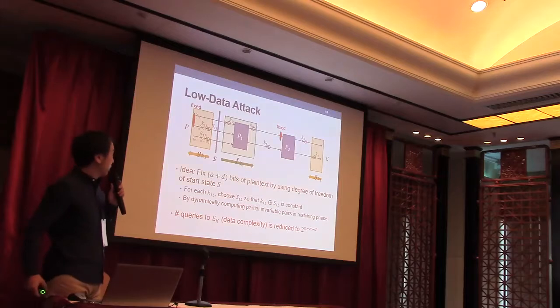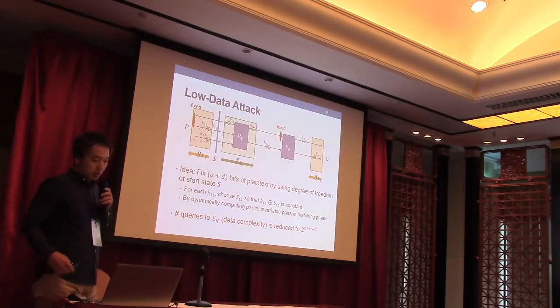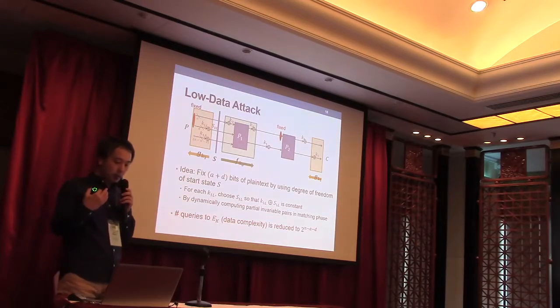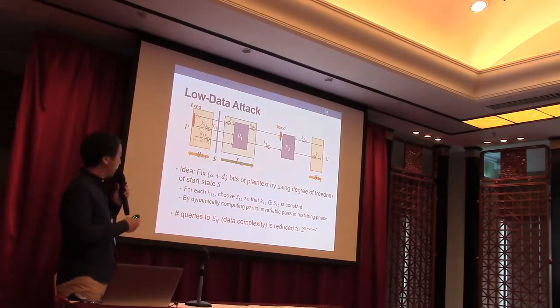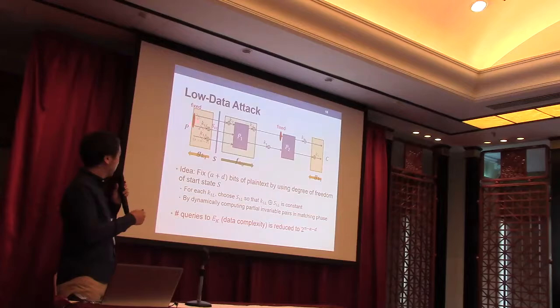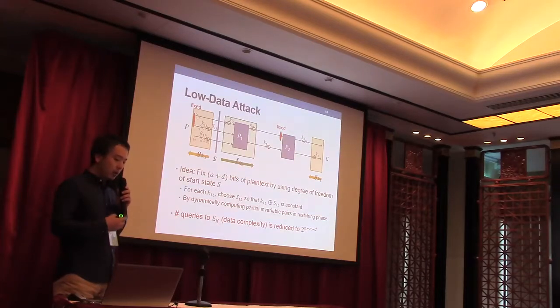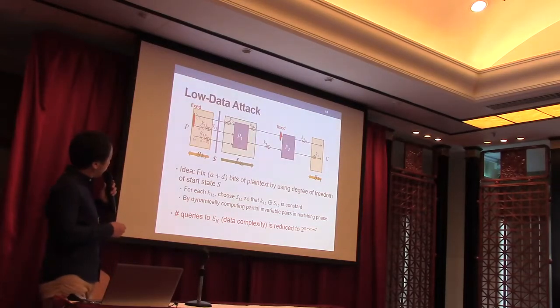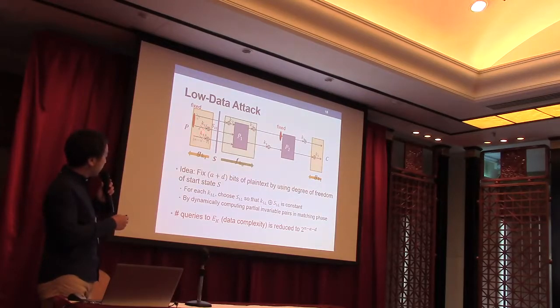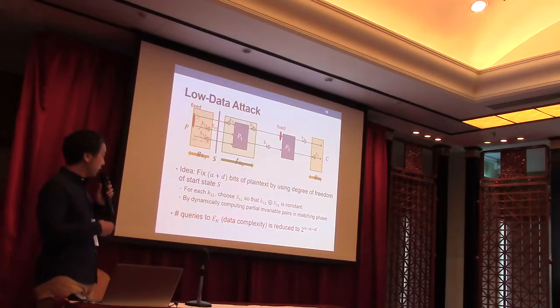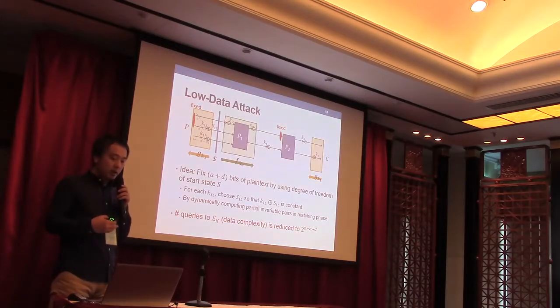The first is the low data variant. The main idea to reduce the data complexity is that we prefix more bits of the plaintext like this. It is possible by using degrees of freedom from the start state S. For each K1L, we choose S1L so that K1L plus S1L is constant.